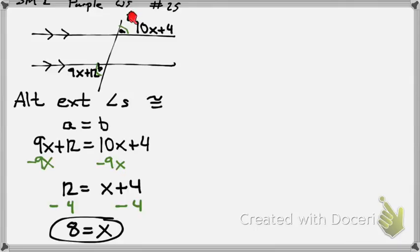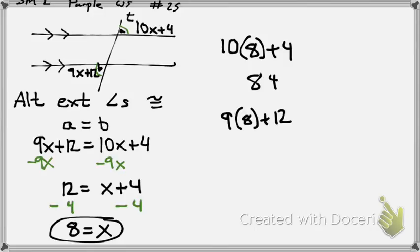How'd you do that? So 10 times x, which is 8, plus 4. 84. Now let's check the other one. Is 9 times 8 plus 12, does that equal 84? Is 72 plus 12, 84? So we did it right.